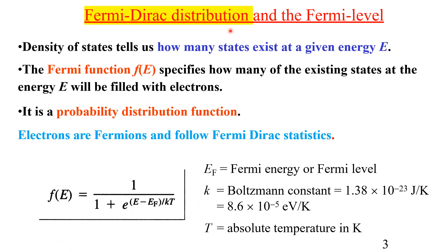Electrons follow the Fermi-Dirac distribution function. The density of states tells us how many states exist in a given energy range, and the Fermi function F(E) describes how many of the existing states at energy E will be filled by electrons. This function is known as the probability distribution function. Electrons are fermions — they have spin one-half and follow the Fermi-Dirac distribution function.